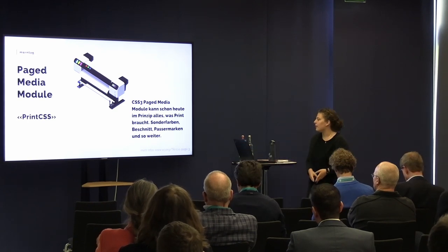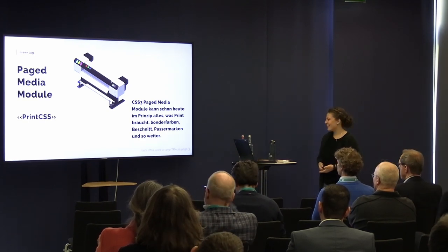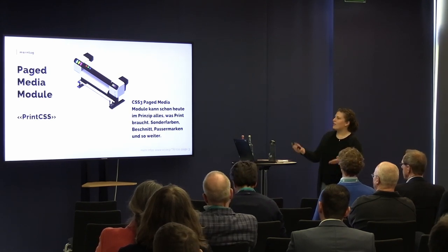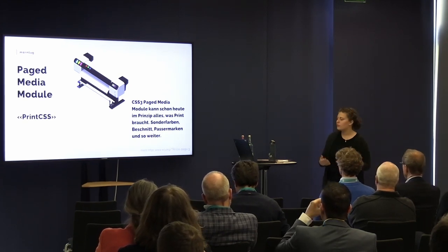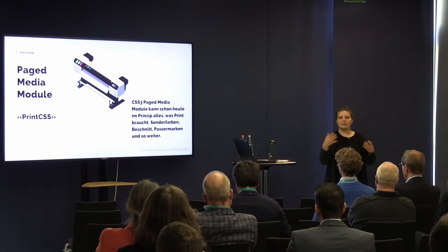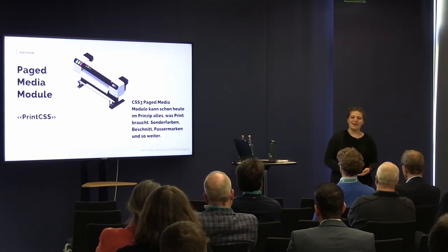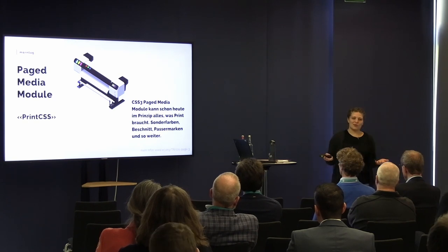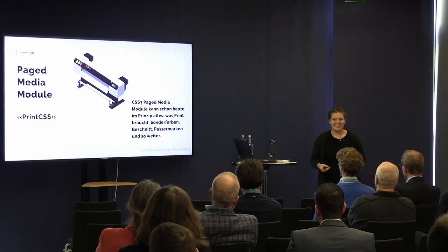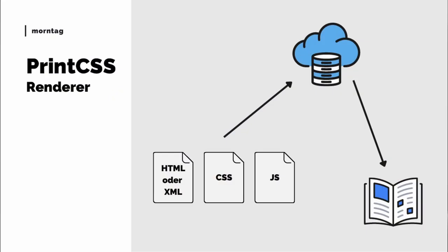If you want more information, there is a link to the charts. The paged media module is described very well there for the coders amongst us. When we print a website, the CSS is rendered with a browser — I go to the website, click print, and my browser renders the PDF. The problem is that most browsers don't render the same way, so when Sönke renders this in his browser, it looks slightly different from the layout on my computer. This is a huge problem — you're all familiar with it in print.